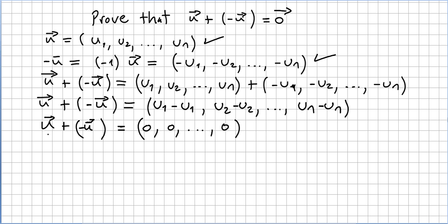So u plus minus u is the vector 0, 0, 0, but this is defined as vector 0. So it is proved that vector u plus vector minus u equals the vector 0, and this concludes the proof.